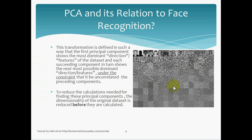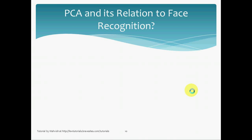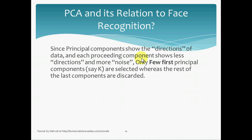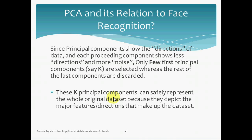That's the benefit of reducing dimensionality: it reduces your calculation effort. PCA does that for you, and the calculations also get faster. Since principal components — eigenfaces — show the directions of the data, and each succeeding component shows less direction and more noise, only the first few principal components, say K, are selected, whereas the rest of the last components are discarded. These K principal components can safely represent the whole original dataset because they depict the major features and directions that make up the dataset.